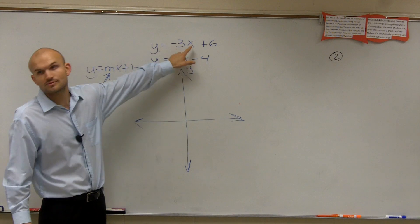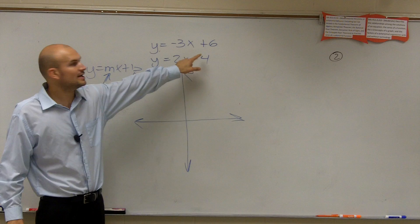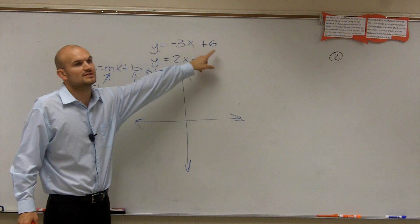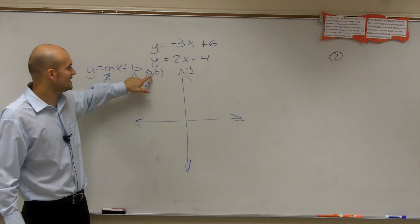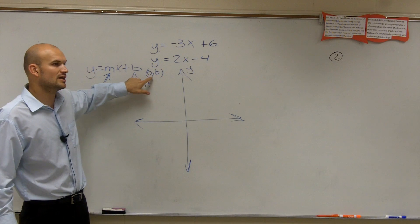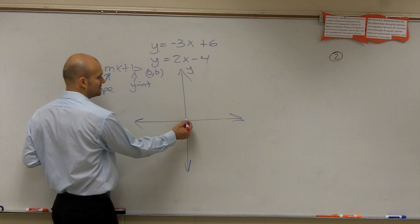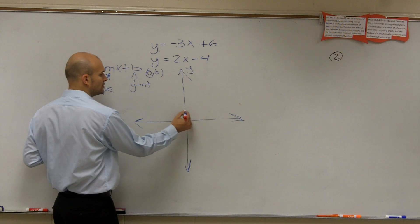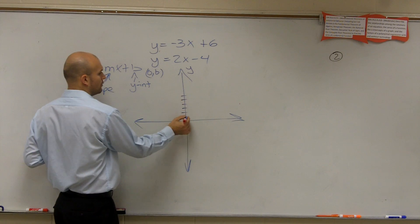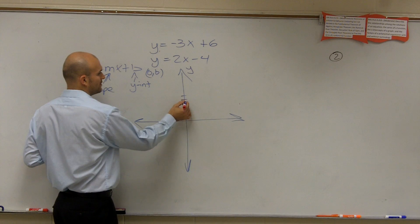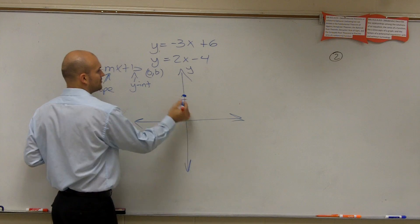So let's look at the first one. The first one has a y-intercept of 6 — we write it as the coordinate point (0, 6). So Madison will go up 6 units and put a point there.